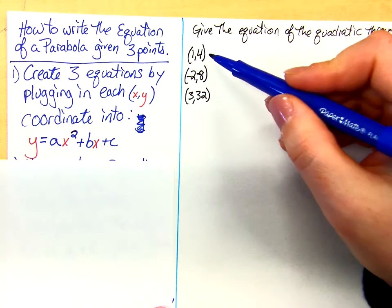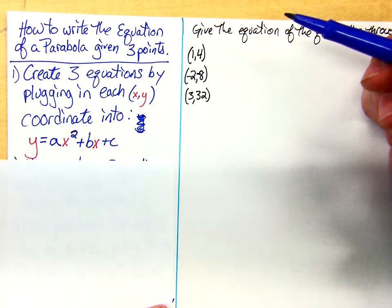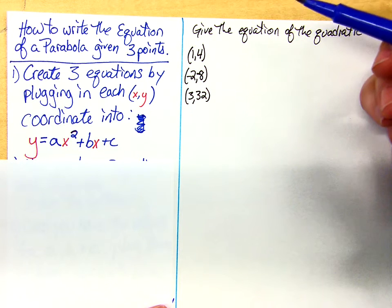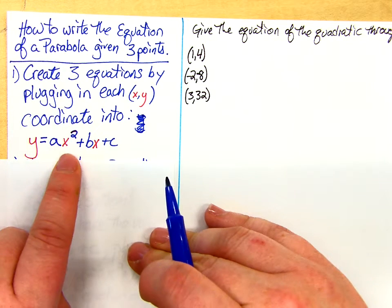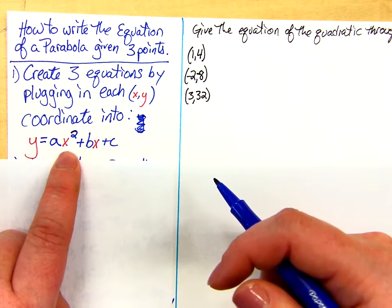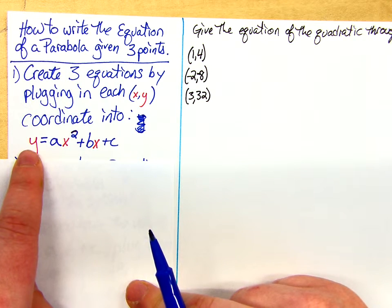If you take a look over here, here's my three random points. I have no idea if anyone's the vertex. I know none of them are x-intercepts because I don't have y's that are zero. You're going to take y equals ax squared plus bx plus c and I'm going to plug in x and y for each one.